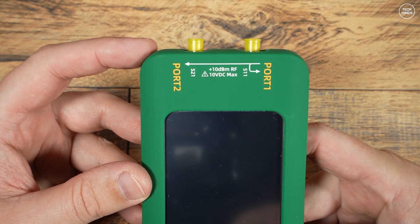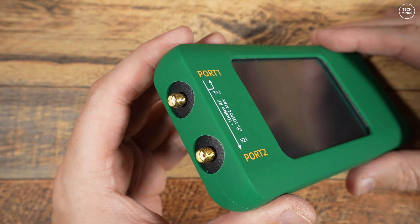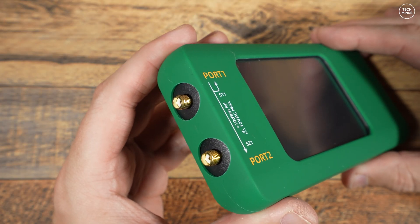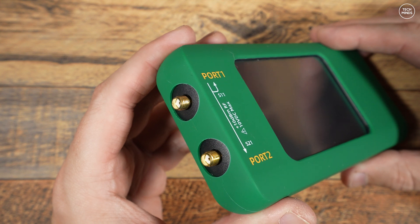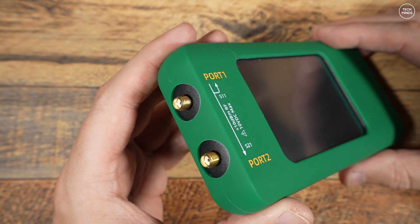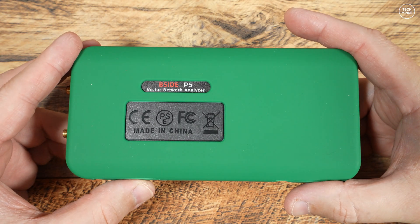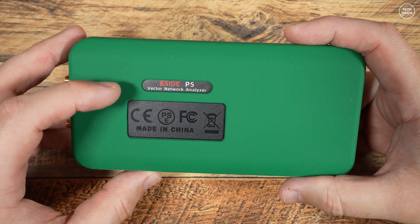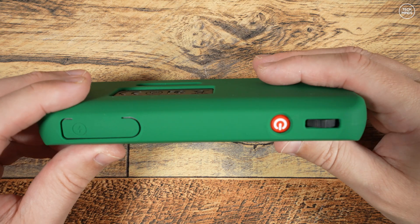Two SMA ports as you would expect on a Nano VNA - that's port one and port two, or S11 and S21. S11 is where you would attach an antenna if you were measuring SWR, for example. Nothing on the back apart from a label saying that this is a B-Side P5 vector network analyzer. I presume B-Side is the manufacturer.